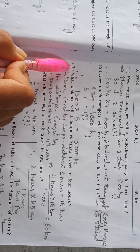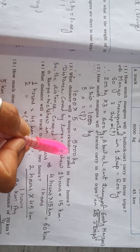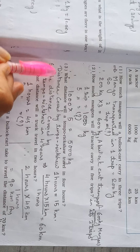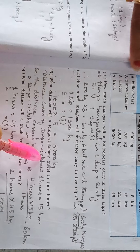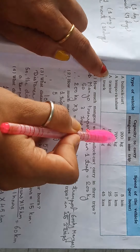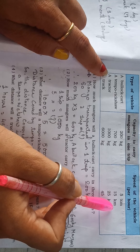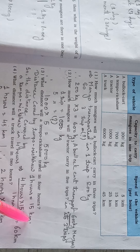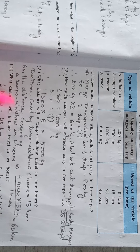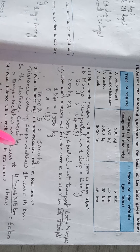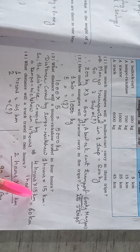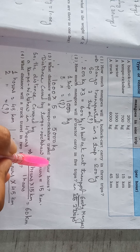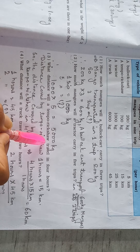Now see question number C. What distance will a tempo rickshaw travel in 4 hours? From the table, the tempo rickshaw carries 7000 kg and travels 15 km in 1 hour. So the distance covered in 4 hours is 4 hours multiplied by 15 km divided by 1 hour, which equals 60 km. A tempo rickshaw covers 60 km in 4 hours.